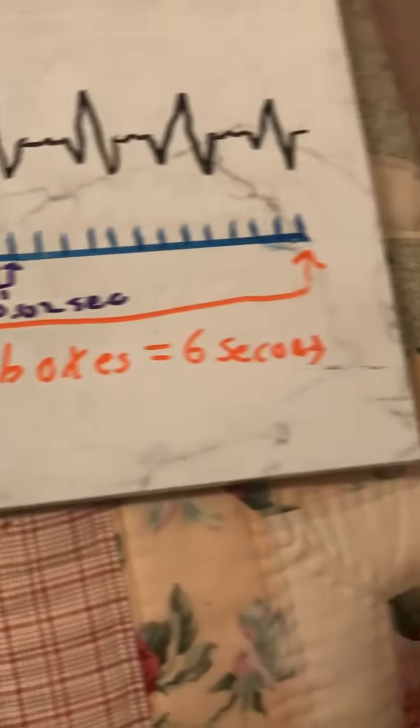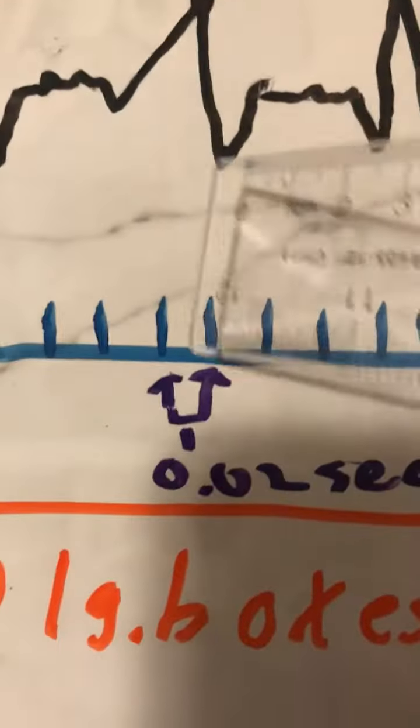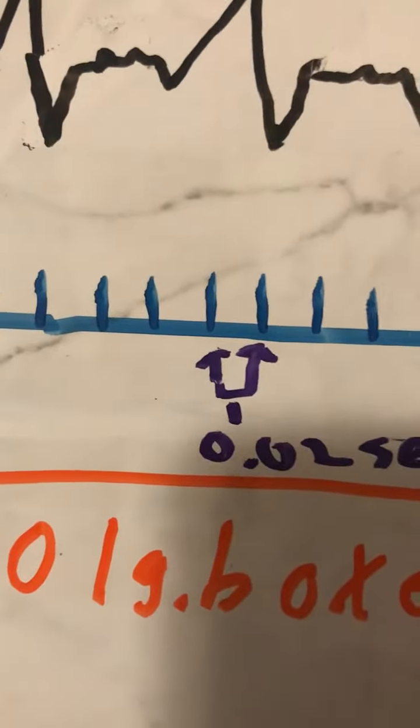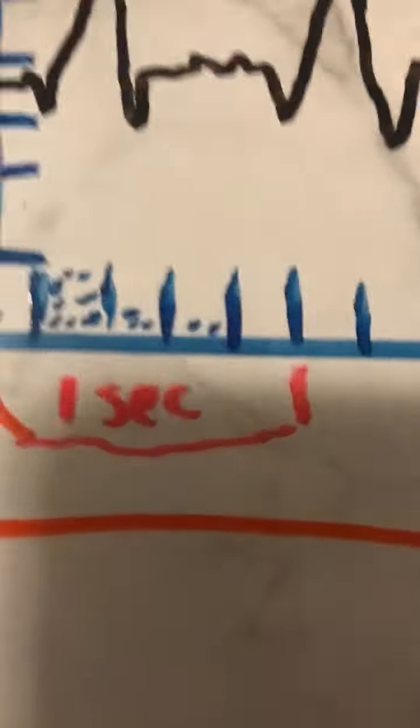So 30 of these boxes is 6 seconds. And so if you take one of these small boxes, that's 0.02 seconds, and then five of these small boxes is one second.